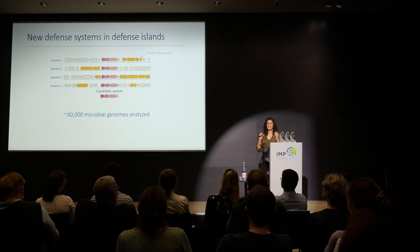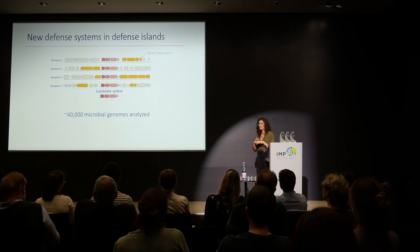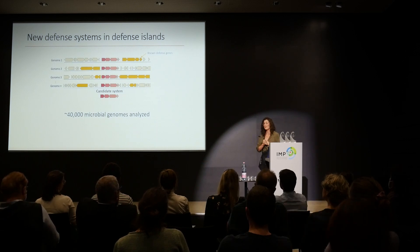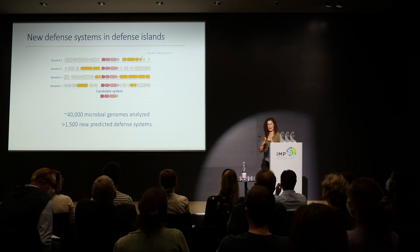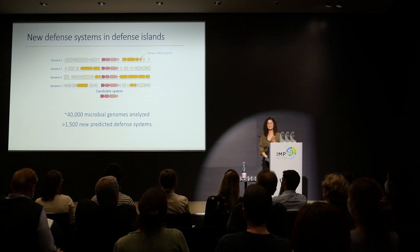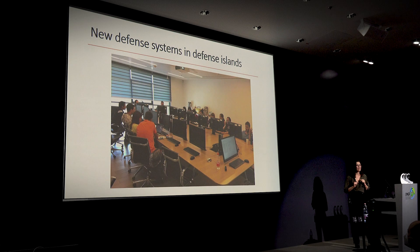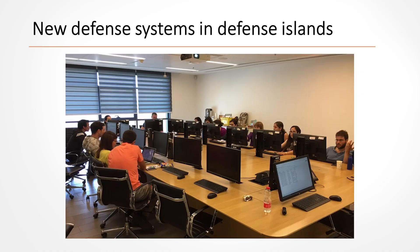I analyzed about 40,000 microbial genomes and found a huge list of new defense systems — hundreds of them. We actually found too many; we had to apply strict filters to narrow down the list to about 1,500 new defense systems, which is still a lot to verify experimentally. So the whole SOREC lab chipped in — we had a defense system day where each lab member got a basket of defense systems to analyze, and we prioritized the interesting ones to study experimentally.